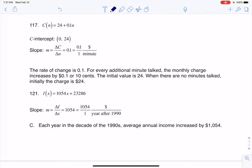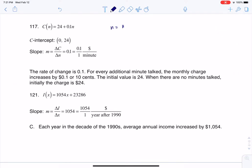They said C of N is 24 plus 0.1N. And they told us N was the number of minutes talked, and C was the monthly charge in dollars.